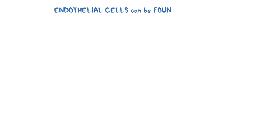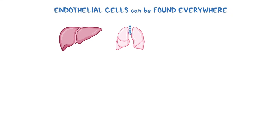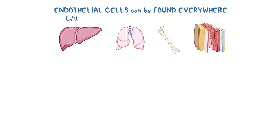Since endothelial cells can be found everywhere where there's blood flow, EHE can develop in almost every organ, including the liver, lungs, bones, and soft tissues. Typically, it causes few symptoms, and when it does, they tend to be quite subtle.